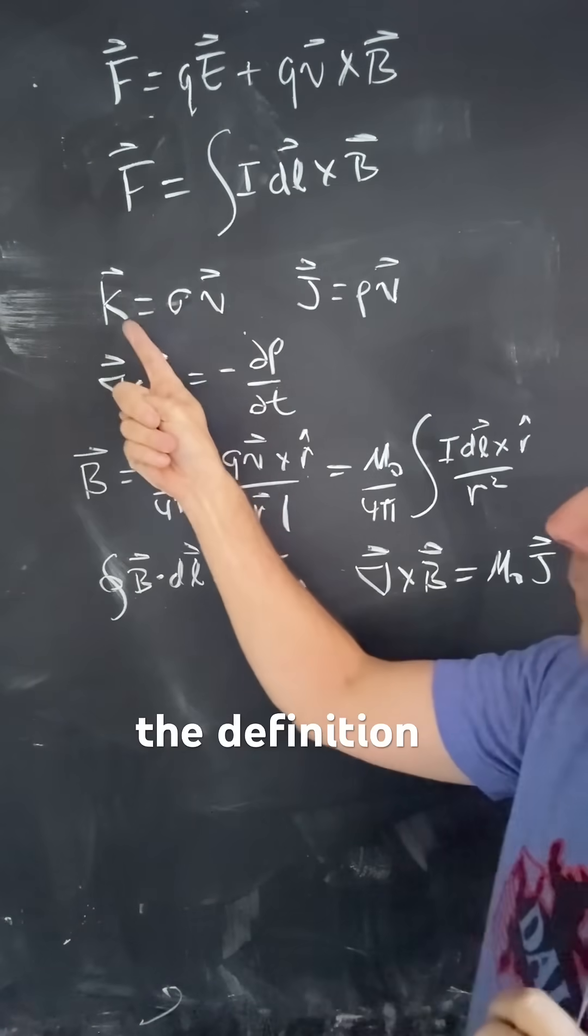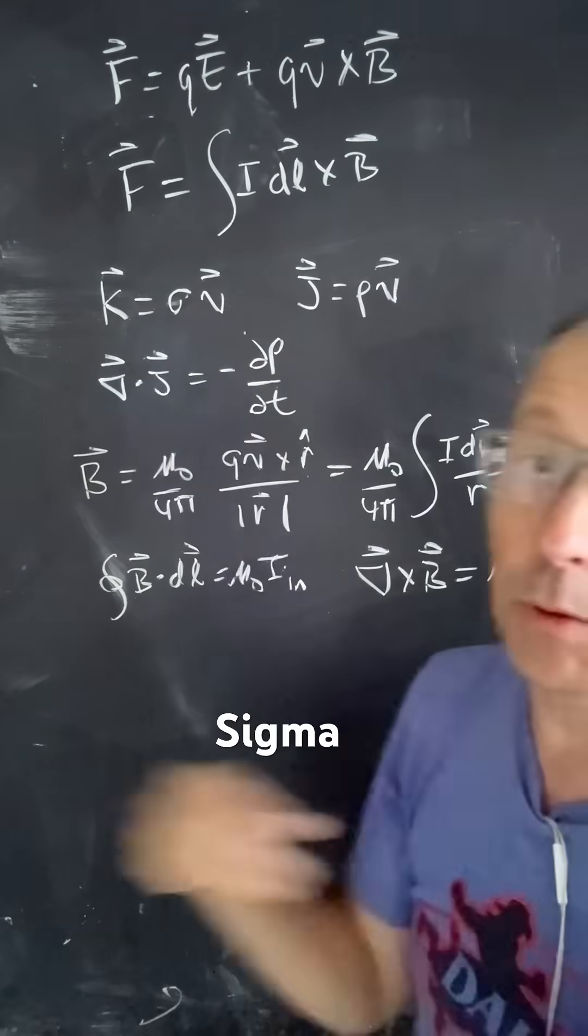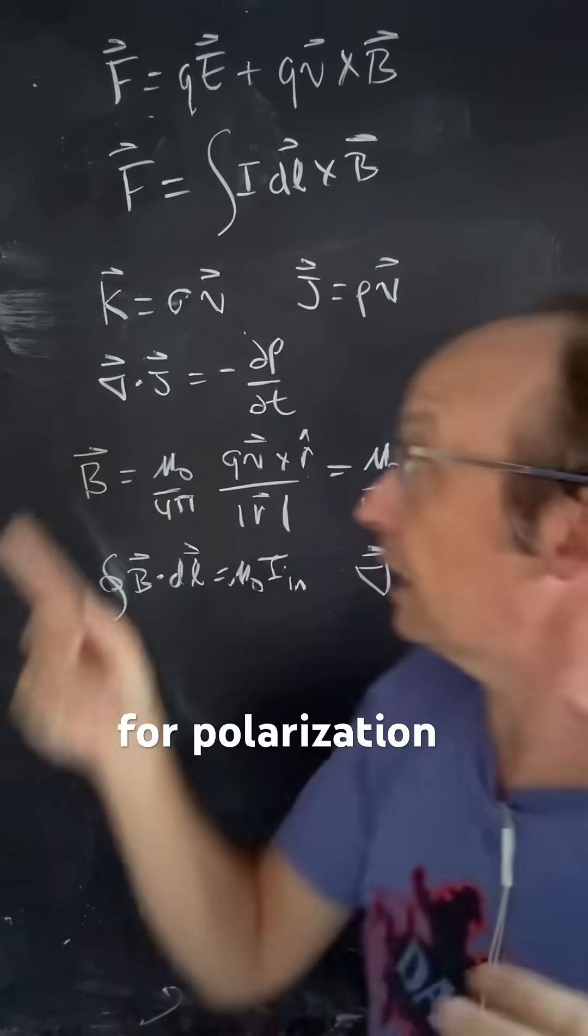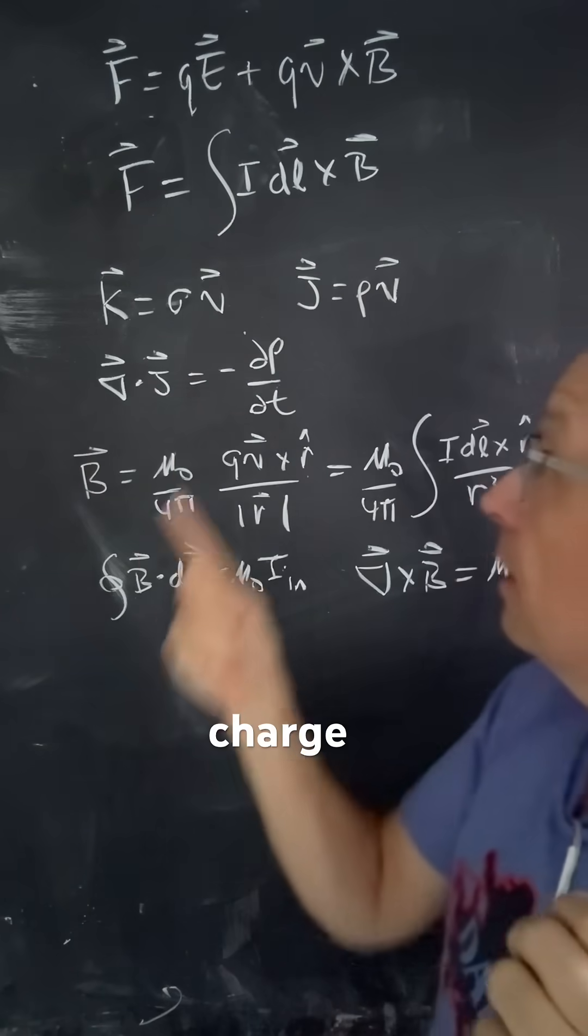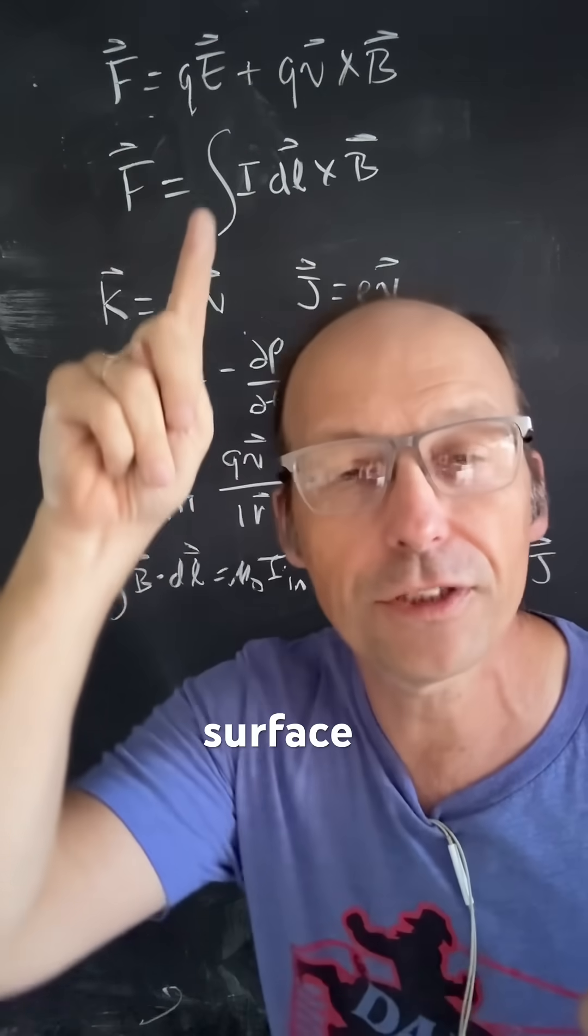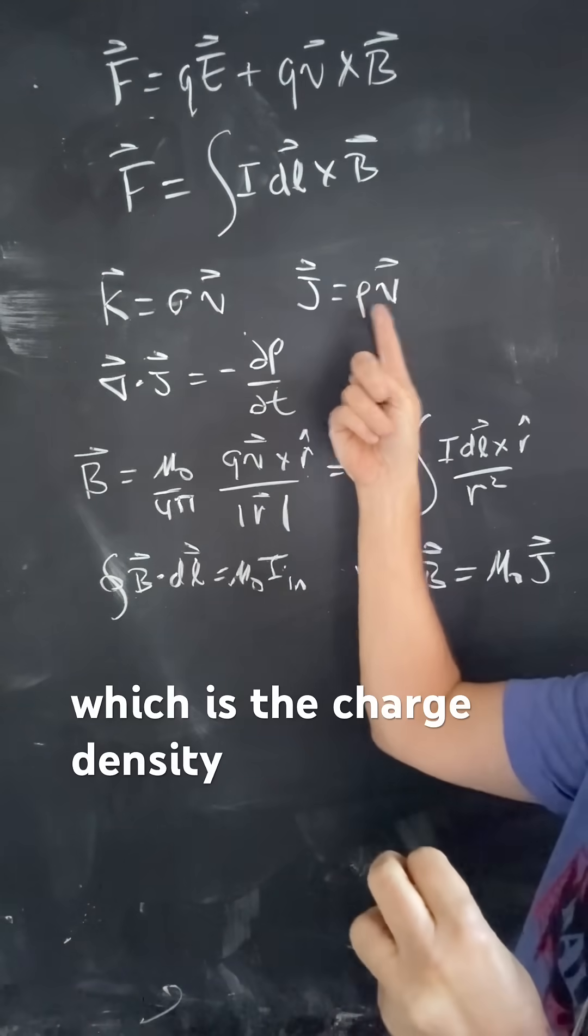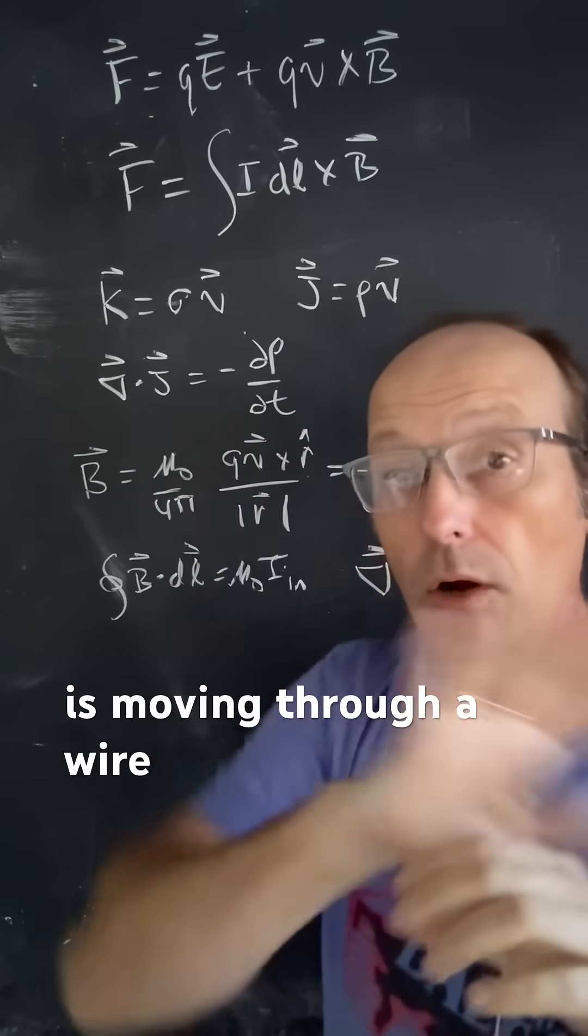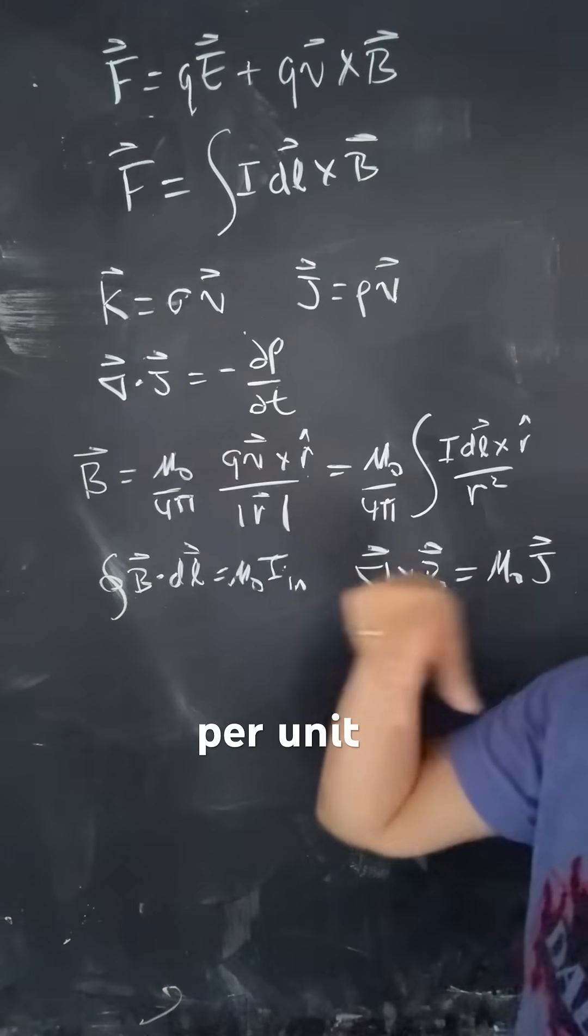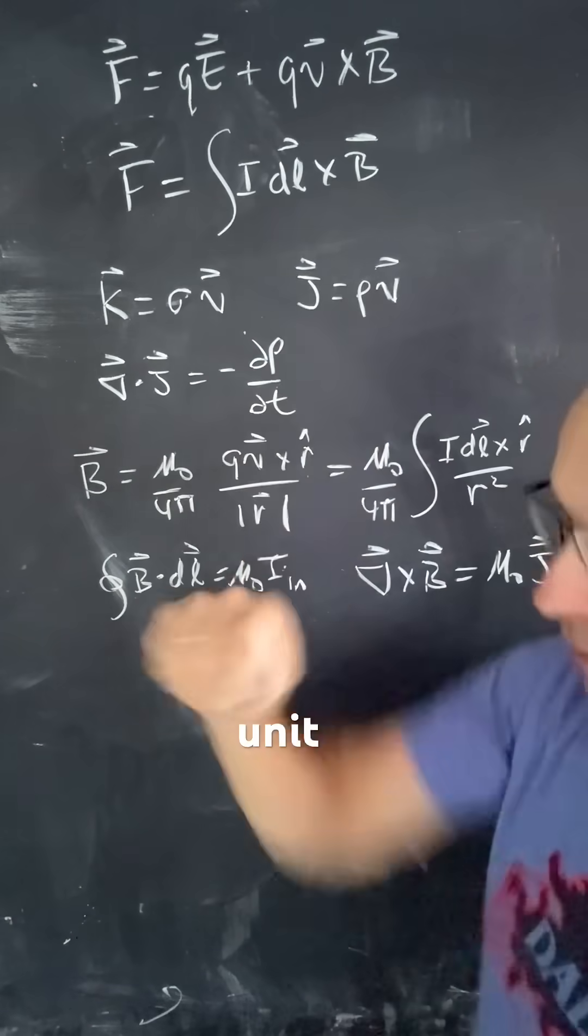This is the definition of the surface charge current. So if I have the surface charge density sigma, which we used before for polarization, and you multiply it by the velocity of those charges, surface charge density, surface current density. And then we have a current density, which is the charge density times the velocity. So that's like if charge is moving through a wire, what's that current per unit area? This is the current per unit surface. It's the current per unit distance.